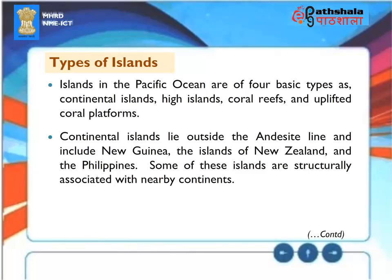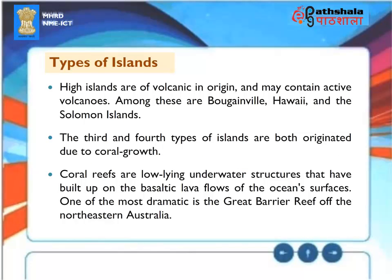Types of Islands: Islands in the Pacific Ocean are of four basic types: continental islands, high islands, coral reefs, and uplifted coral platforms. Continental islands lie outside the Andesite line and include New Guinea, the islands of New Zealand, and the Philippines. High islands are volcanic in origin and may contain active volcanoes; among these are Bougainville, Hawaii, and the Solomon Islands. Coral reefs are low-lying underwater structures built up on basaltic lava flows, one of the most dramatic being the Great Barrier Reef of northeastern Australia. The third and fourth island types are both originated from coral growth.